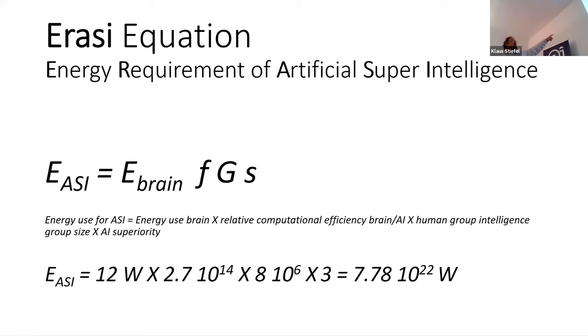It's very interesting. I mean, I think this is very similar, right? So, the energy requirement for artificial superintelligence is essentially the energy requirement of the brain times F, which is how much less efficient are computers. And so, here we have 900 million, right? And then, we have G, which is the group size for, you know, group intelligence. So, we took 8 million, but it's actually, the argument does not depend on that very much.